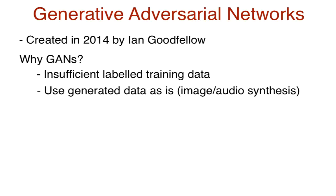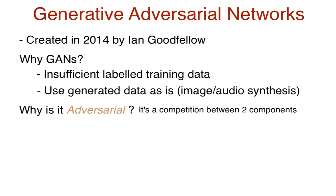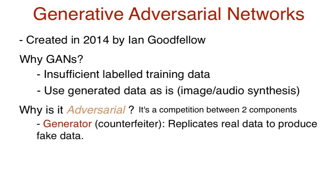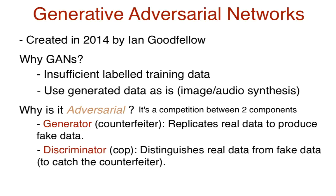We've covered the generative part of GANs — what about the adversarial part? When I hear the term adversarial, I think of reinforcement learning and gameplay. A basic GAN consists of two models that play against each other: a generator and a discriminator. Think of the generator as the counterfeiter, who tries to replicate the input data to produce fake data. The discriminator, on the other hand, is like a cop who needs to distinguish between the real data from the dataset and the counterfeit data produced by the generator.